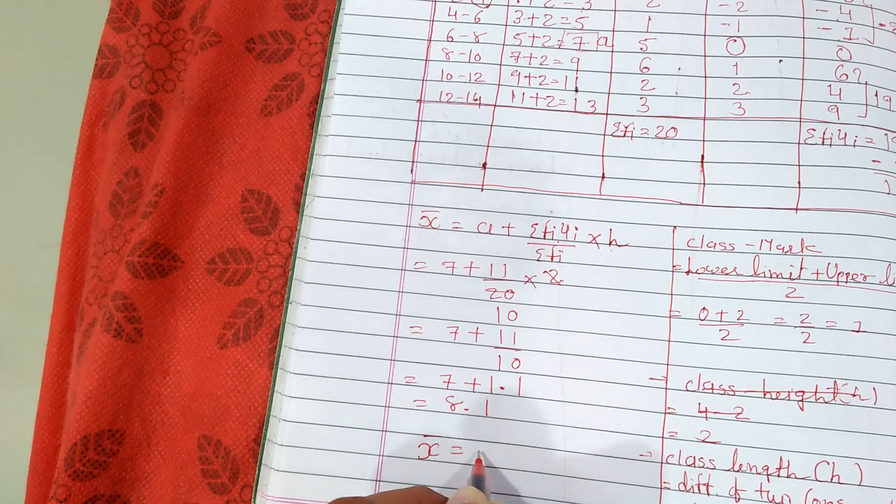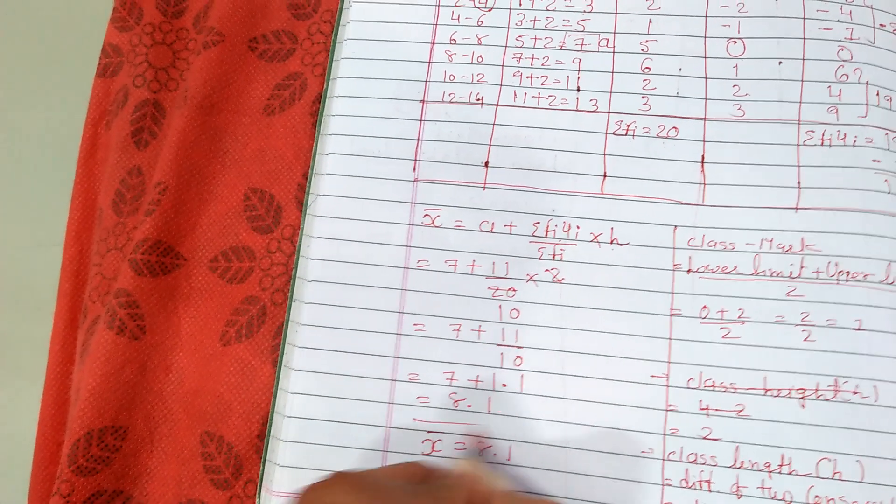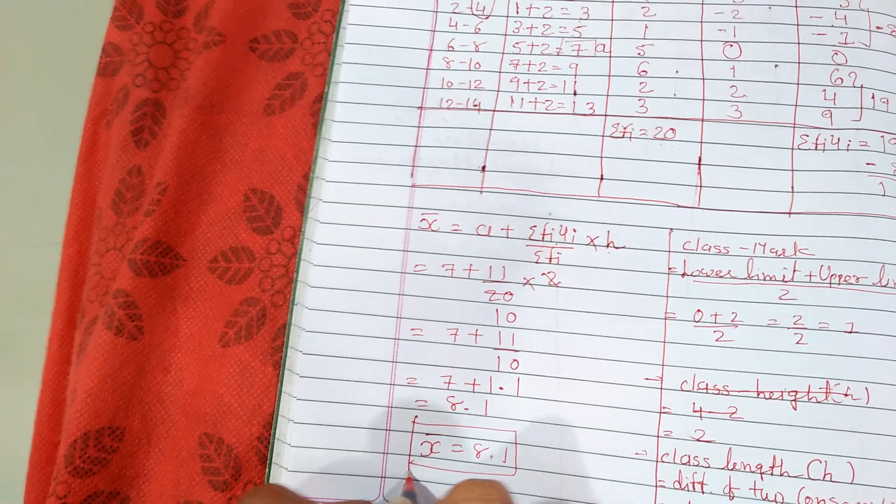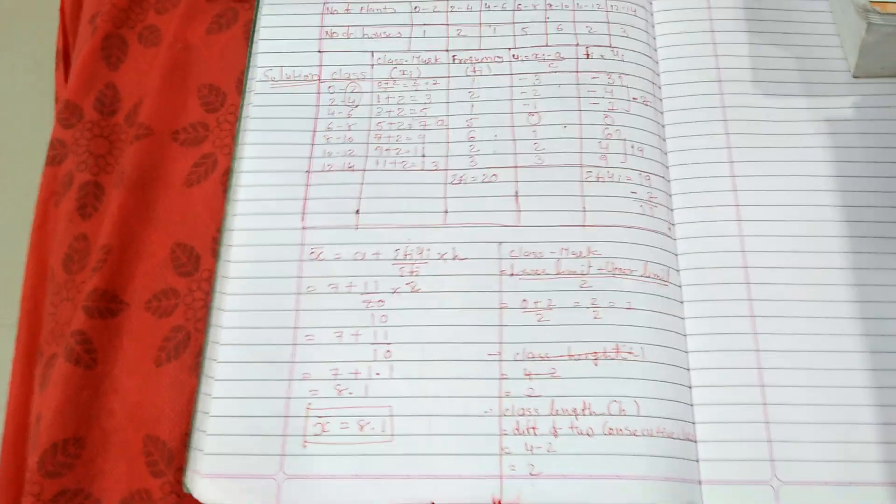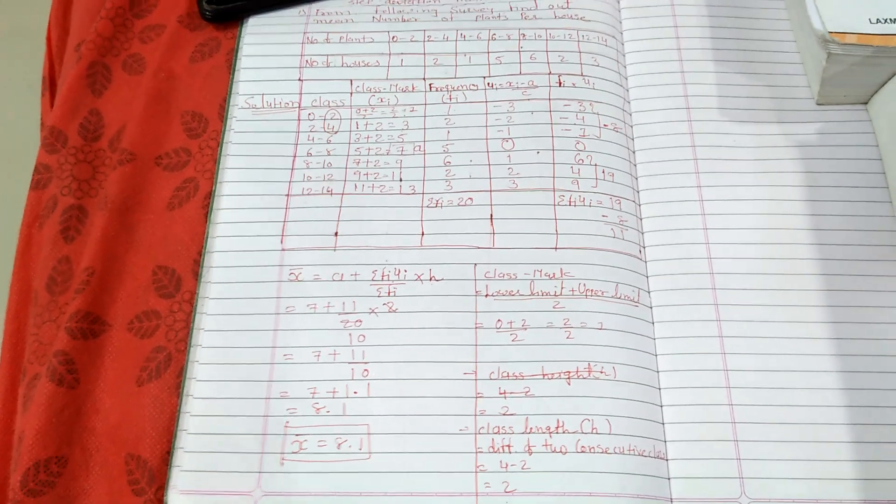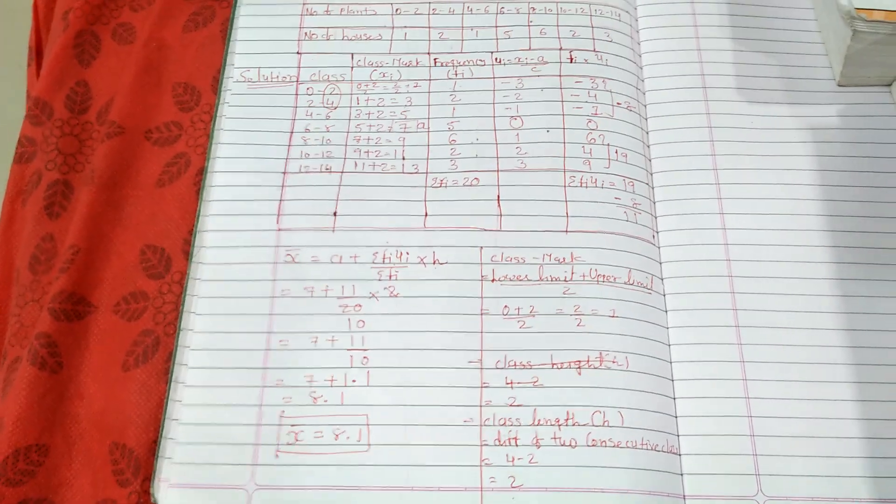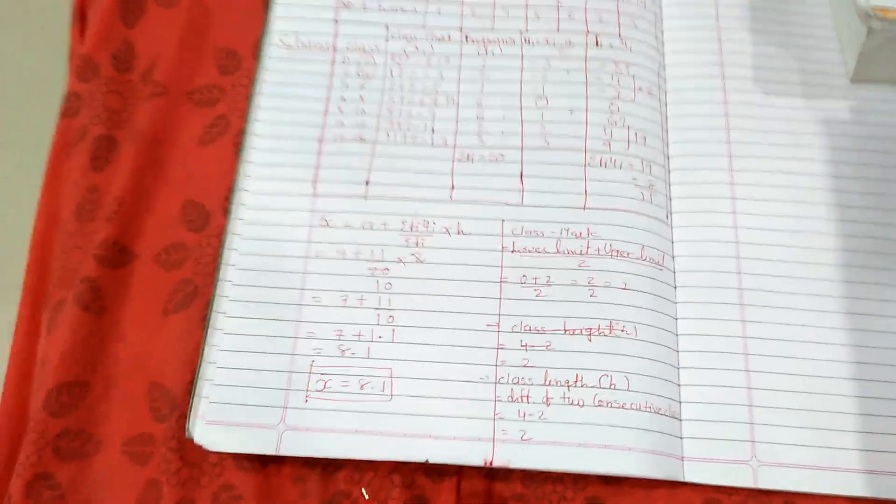Now 7 plus 1.1 equals 8.1. So here, mean x bar is 8.1. This is our mean.